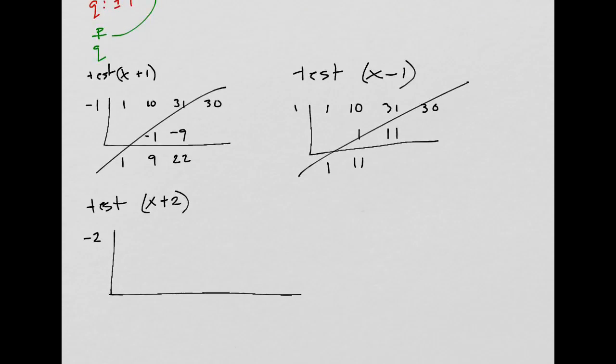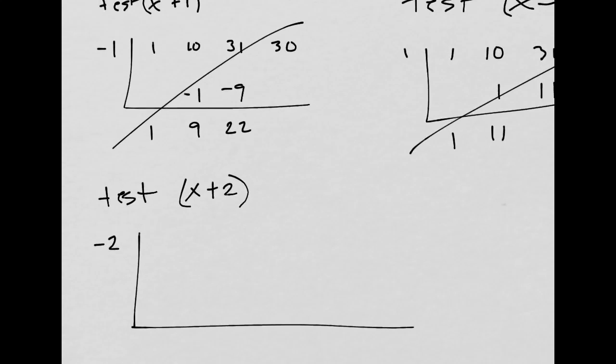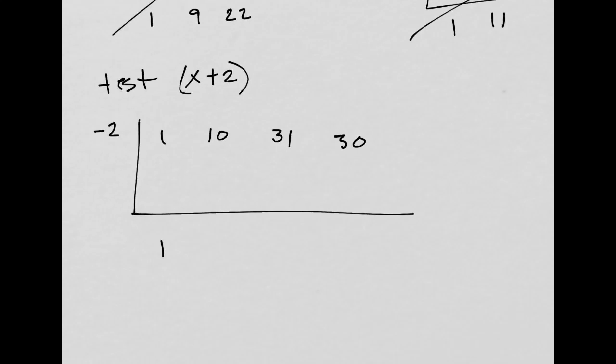Hopefully you understand why I want to have a negative there, because these are all positive numbers. I'll never get anything that cancels out if I don't use a negative. So 1, 10, 31, 30. This would be 1, negative 2. This would be 8, negative 16. This will be 15, negative 30. Hey, oh, that worked out!